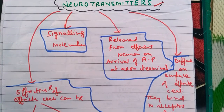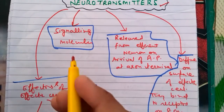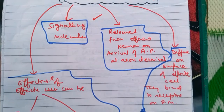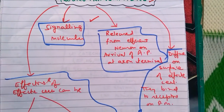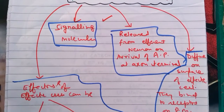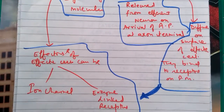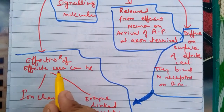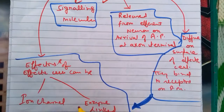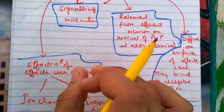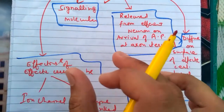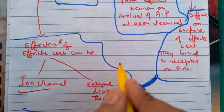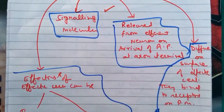First of all, starting with the general role of neurotransmitters and their nature. They are signaling molecules that take a signal from one type of neuron and convert it into another type of signal to another neuron. They show their effect on the effector cells, and the receptor can be an ion channel or an enzyme-linked channel — both types the neurotransmitter acts upon.